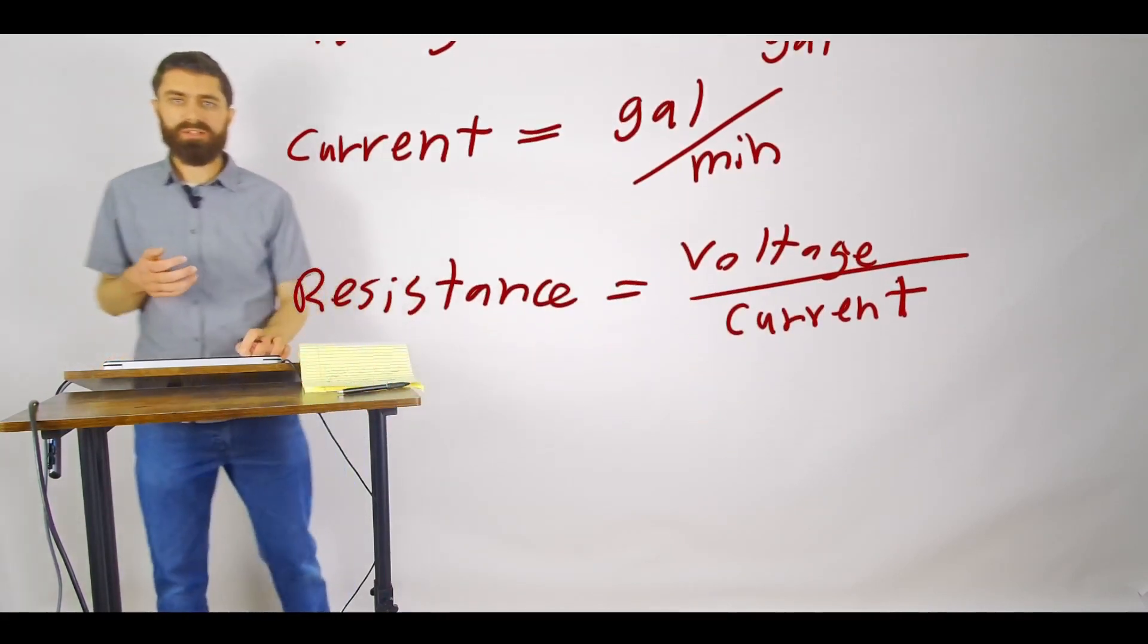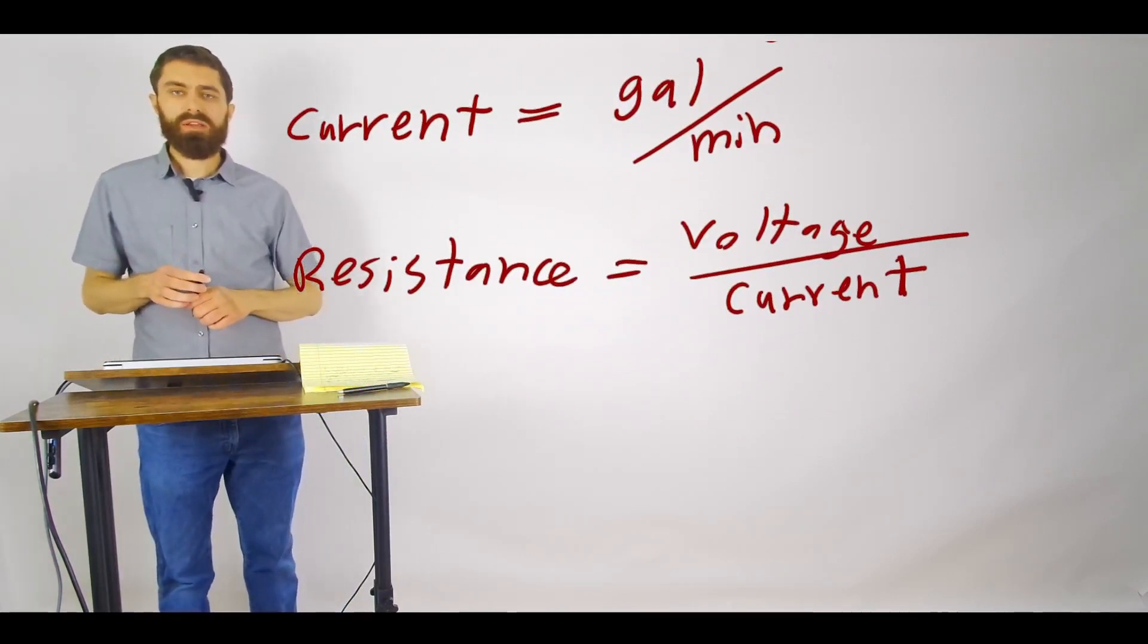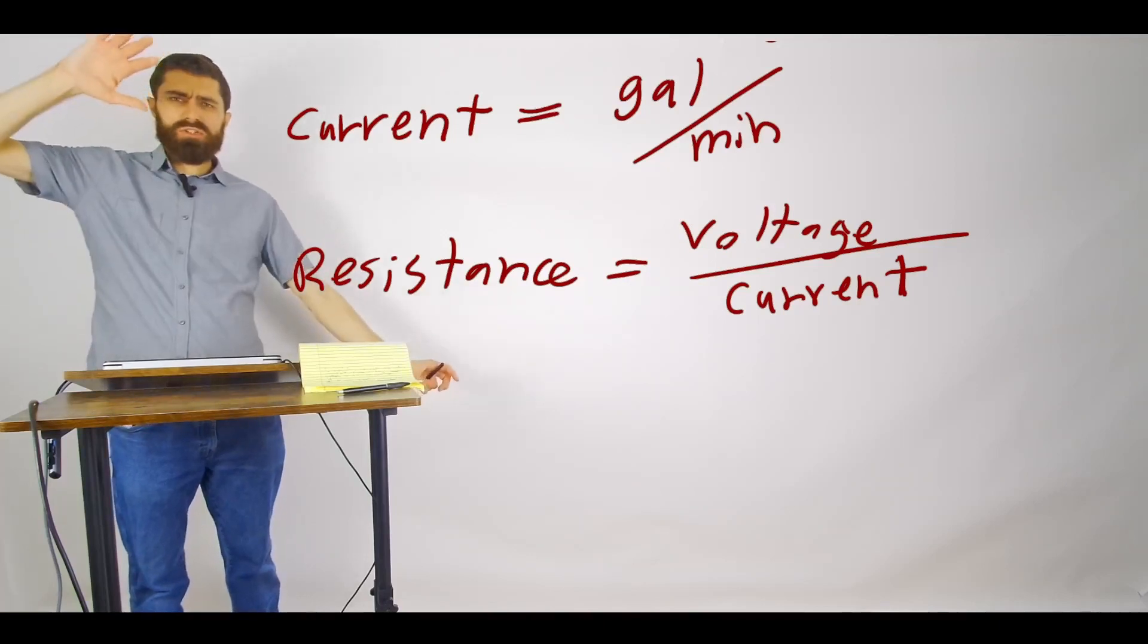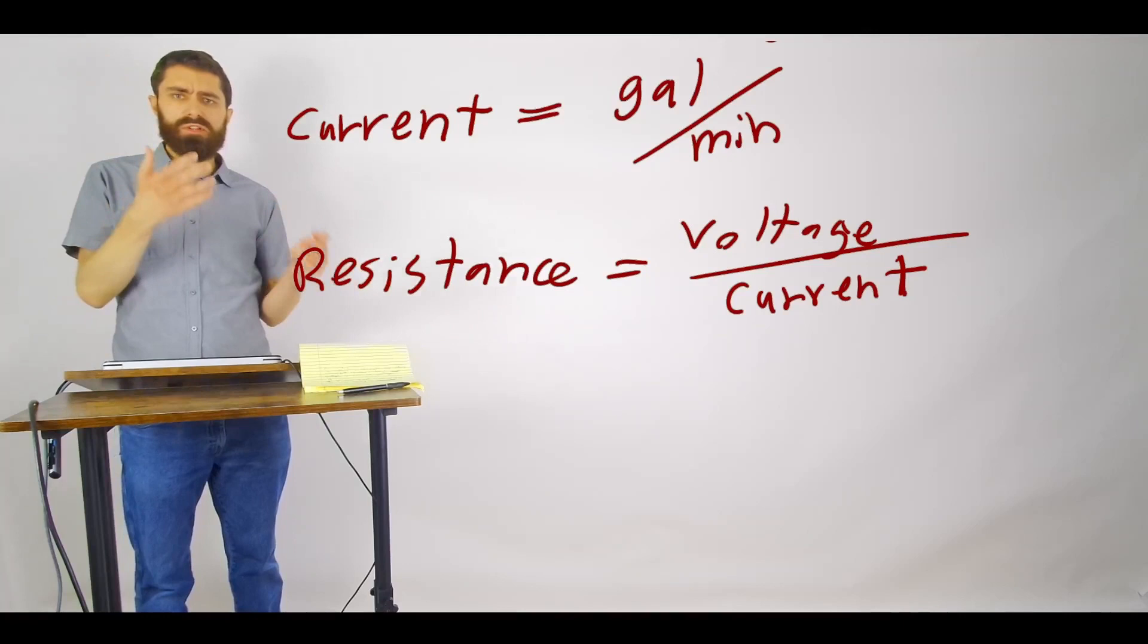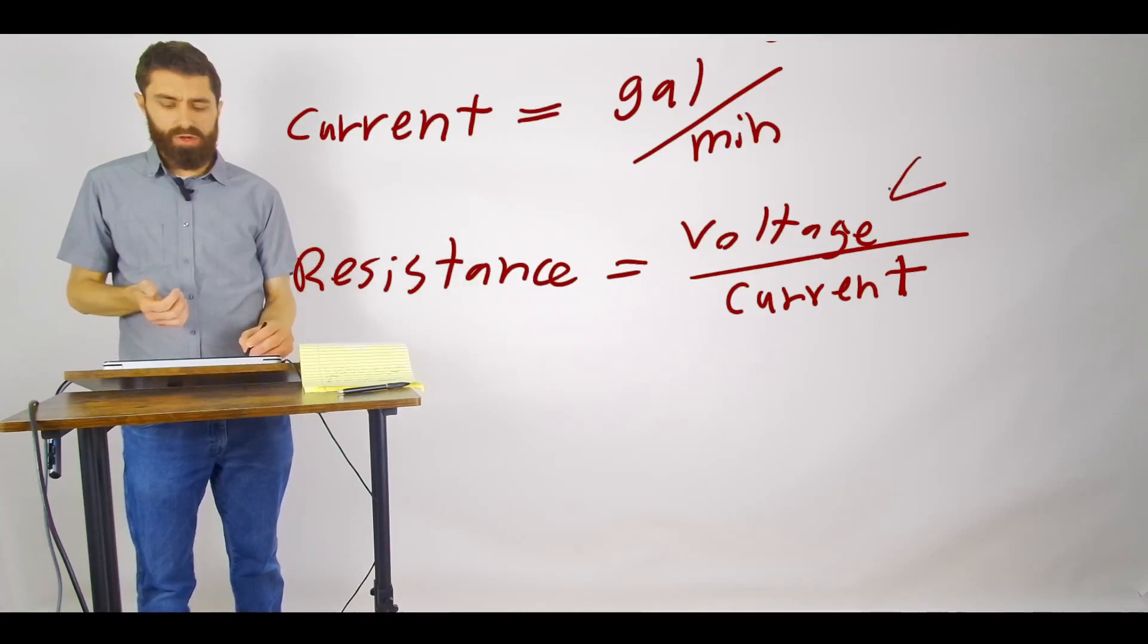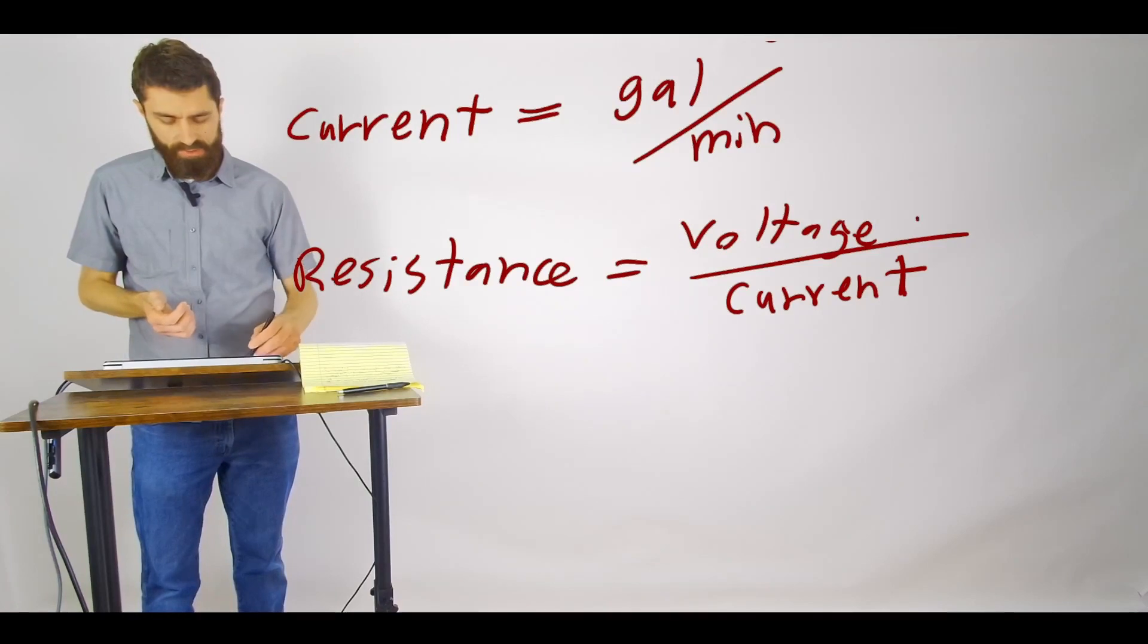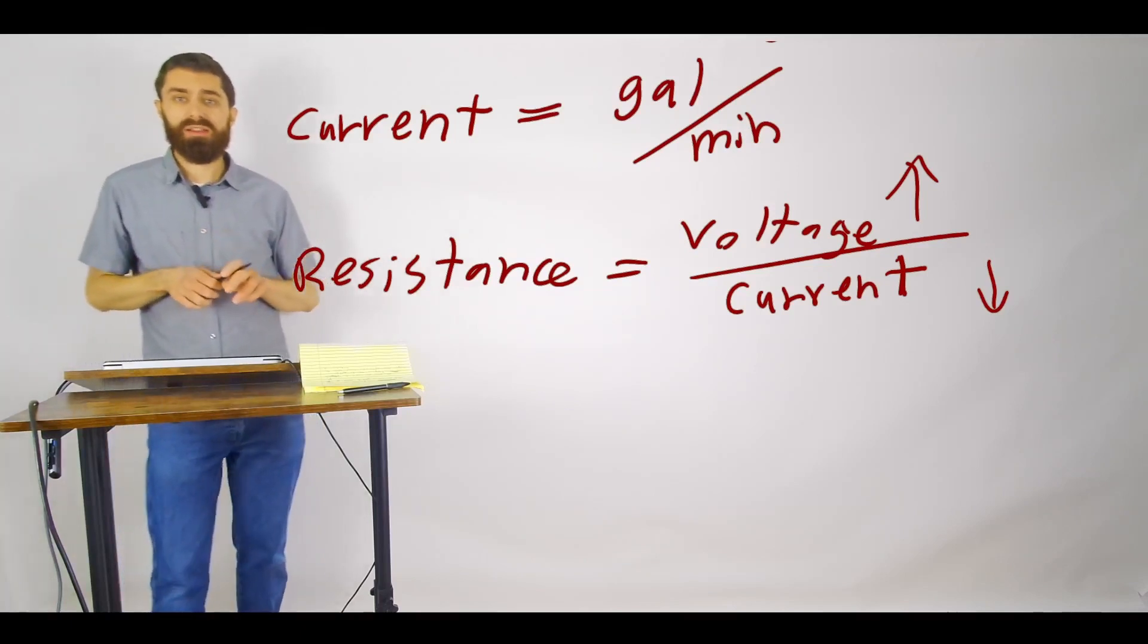So hopefully that makes sense. If you had a turbine that was running and it required a huge difference in heights between your tanks, and you noticed that the flow was not very strong too, well a really large voltage and then a small current means your resistance would be very high in that case.